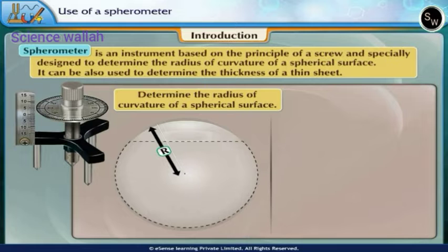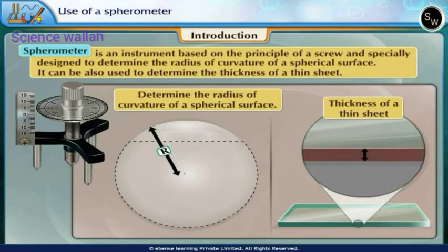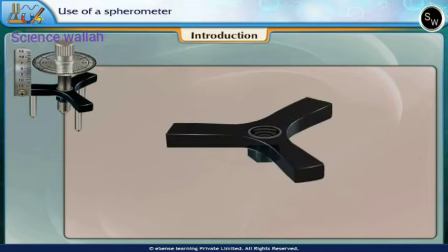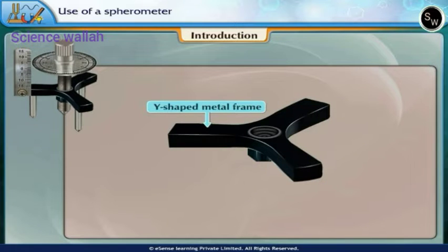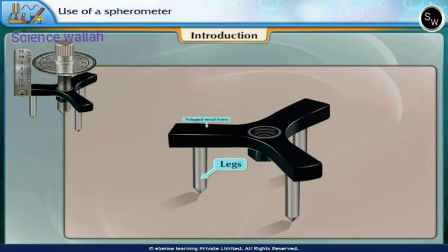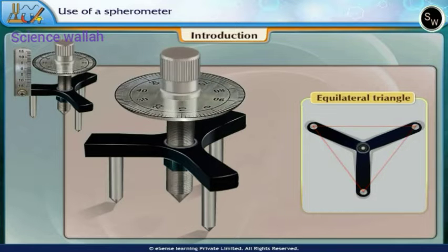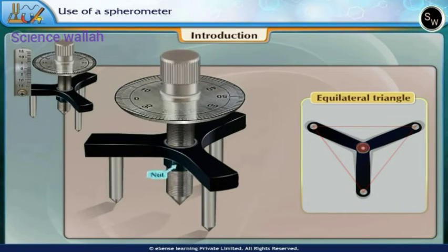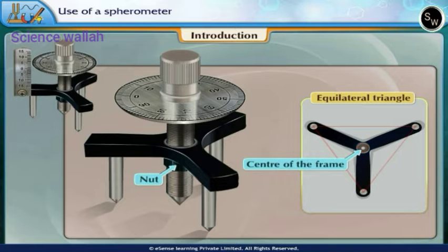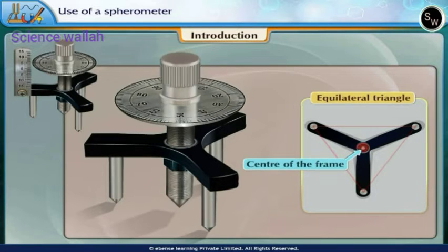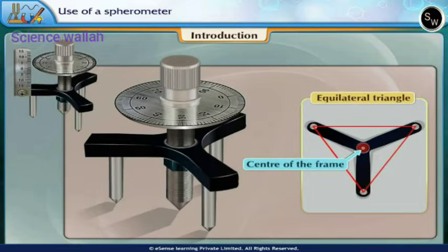It can also be used to determine the thickness of a thin sheet. It consists of a small triangular or Y-shaped metal frame supported on three legs. The tips of the legs form an equilateral triangle. A screw of fine pitch passes through a nut at the center of the frame. The axis of the screw passes through the centroid of the equilateral triangle.